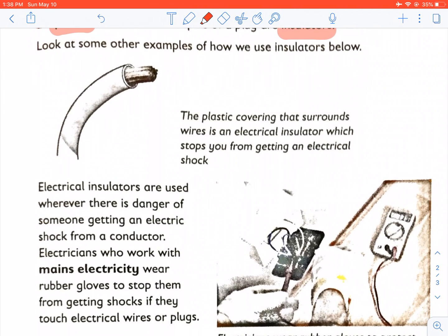Look at some other examples of how we use insulators below. The plastic covering that surrounds wires is an electrical insulator which stops you from getting an electrical shock.